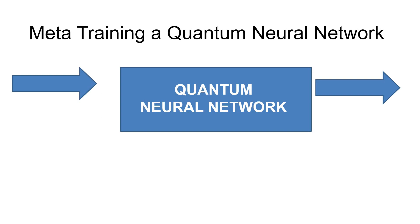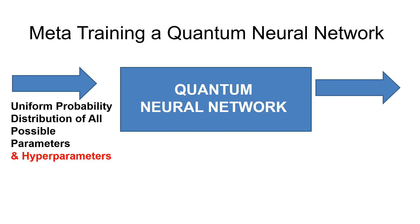We also explored meta-training quantum neural networks. It's very similar to what we've already done. We also input hyperparameters, so that the output is a distribution of all possible losses, including hyperparameters, which we call the meta-loss landscape.